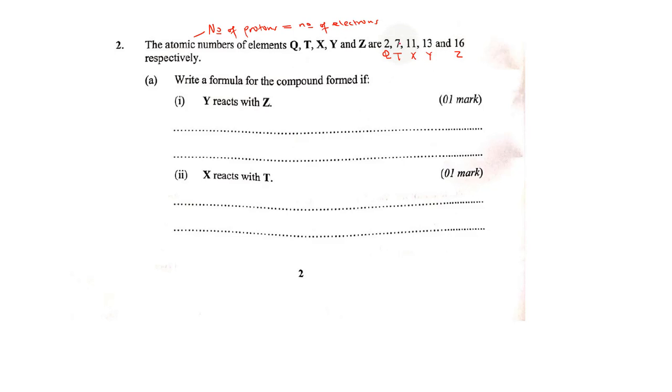So respectively, I'll arrange them in the right order. So we have Q, atomic number is 2, so electronic configuration is 2. We are using the ordinary way of writing electronic configurations. So we have T, T has atomic number 7, first energy level 2, second will take the rest which will be 5. Then we have X has 11, first energy level will take 2, the next will take a maximum of 8 and the last one will take the remainder. Then we have Y which is 13, so the same way like X, 2, 8 and then 3. And lastly we have Z which is 16, so we shall have 2, 8, 6.